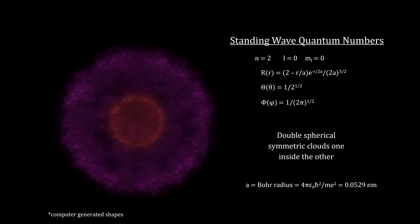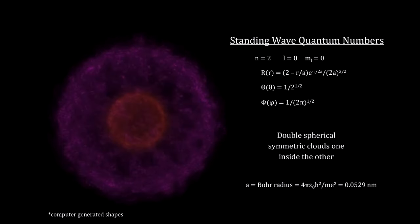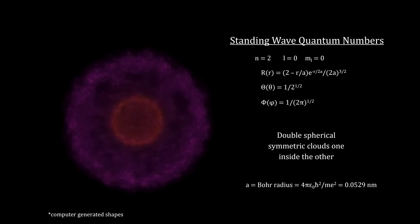For each energy level N, the associated angular momentum is also quantized into electron subshells, designated by the letter L. It determines the shape of the orbital.